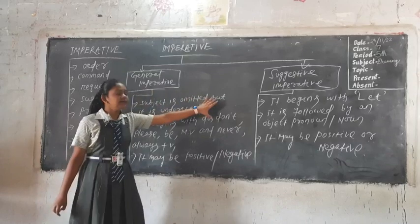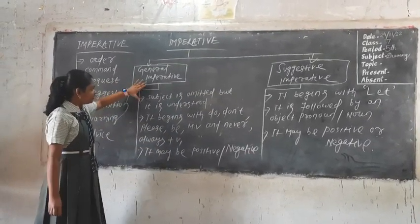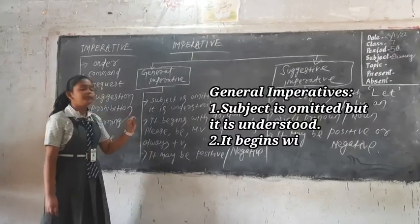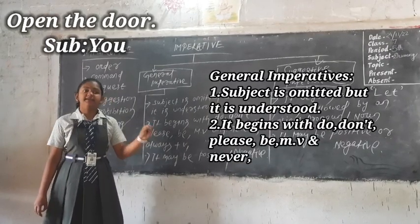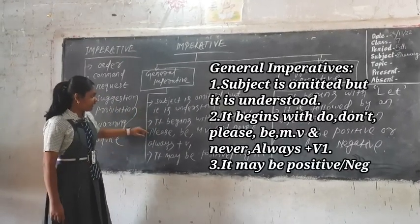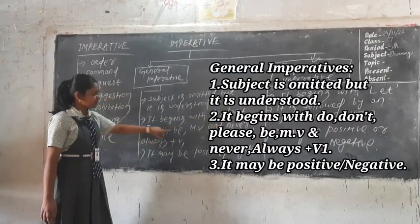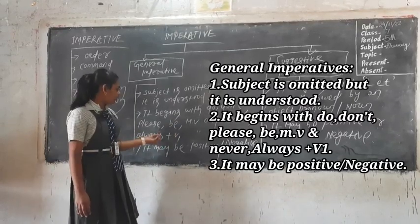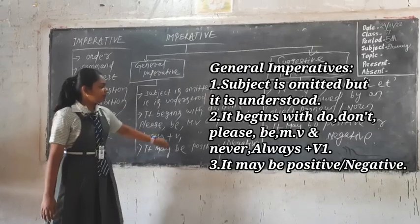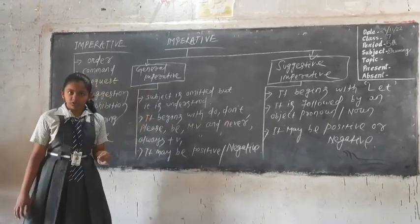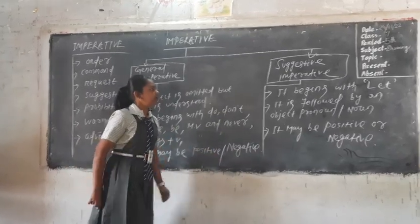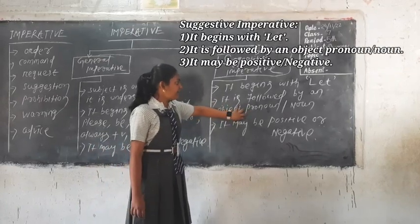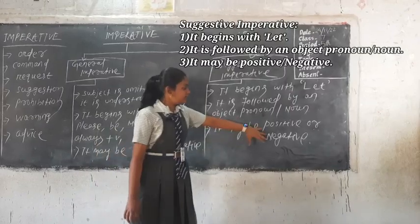We all know that imperative can be of two types: general imperative and suggestive imperative. General imperative has these features — first of all, the subject is omitted but it is understood. For example, 'open the door' — we all know that the subject is 'you'. It is understood. The door is the object. It begins with do, don't, please, be, main verb, and never or always plus verb 1. The suggestive imperative begins with 'let', like 'let us go to picnic'. It is followed by an object pronoun or noun, and it may be positive or negative.